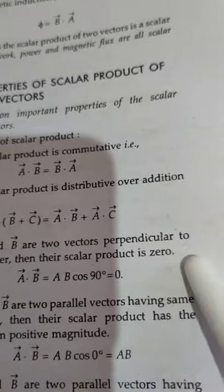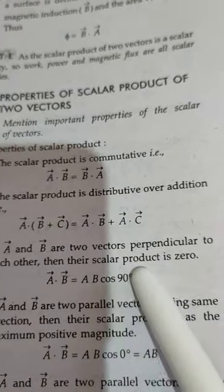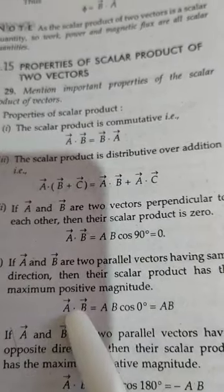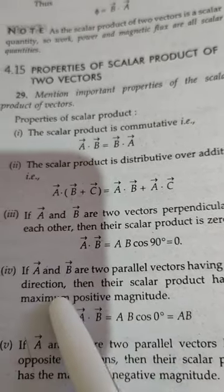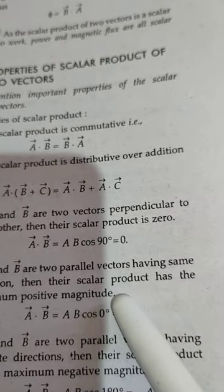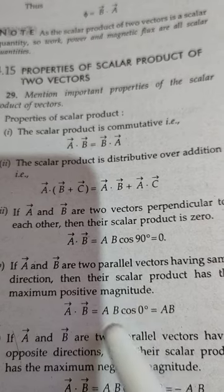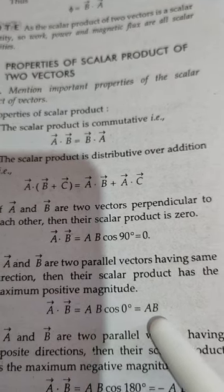If A and B are two vectors perpendicular to each other, then their scalar product is zero. If A and B are two parallel vectors having the same direction, then their scalar product has a maximum positive value, which is AB cos(0°) = AB.